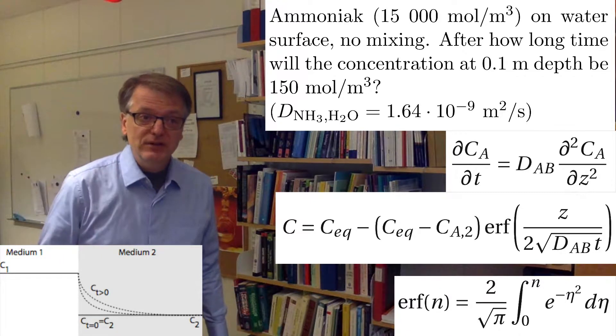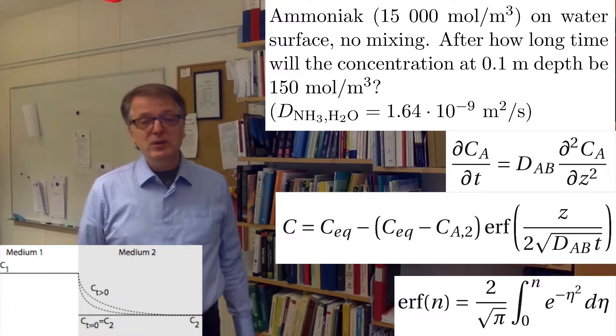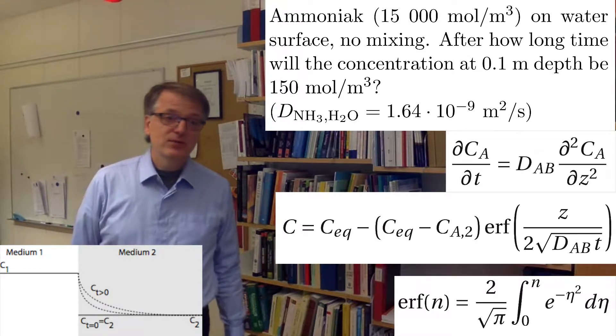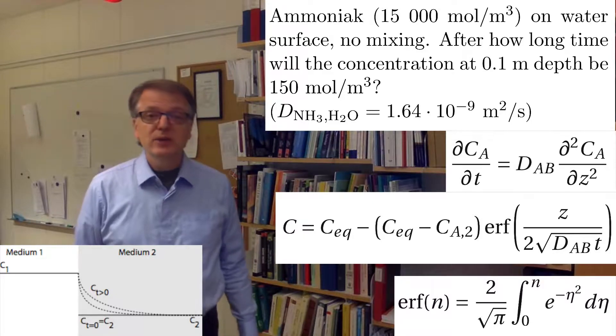We need to know the diffusivity here. So let's say that the diffusivity for ammoniac in water is 1.64 × 10^-9 square meters per second.